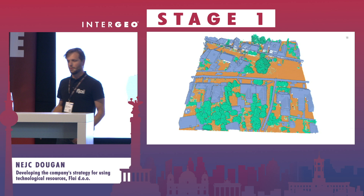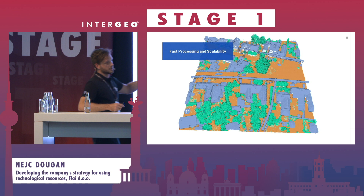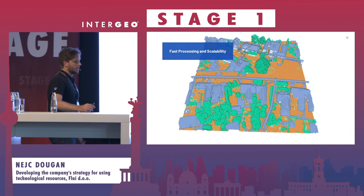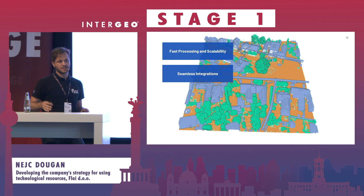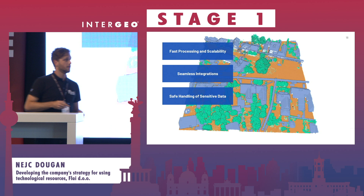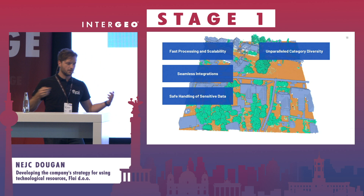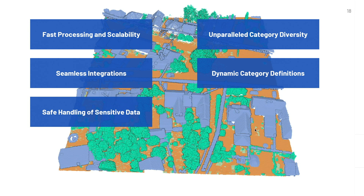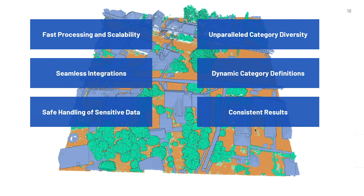To conclude, the key advantages of using AI and machine learning are fast and scalable processing, seamless integration into your workflows or information systems, safe data handling, unparalleled category diversity with dynamic category definitions, and always consistent results. With a single algorithm doing all the processing, the definition of everything is the same — unlike a large manual annotation team where each annotator would do things slightly differently.